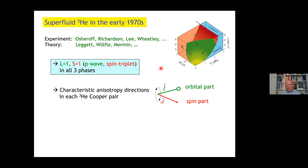Research shortly after the discovery, early 1970s, was a wonderful combination between experiment and theory, mainly NMR or spin dynamics experiments and collective modes experiments done by Osheroff, Richardson, Lee, and Wheatley. In theory, Tony Leggett and Peter Wölfle and David Mermin and others. It soon turned out that miraculously in all three phases, the same kind of pairing takes place, namely p-wave and spin triplet, L equal to 1 and s equal to 1.